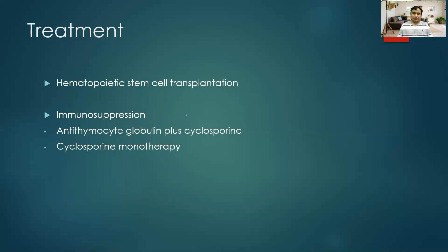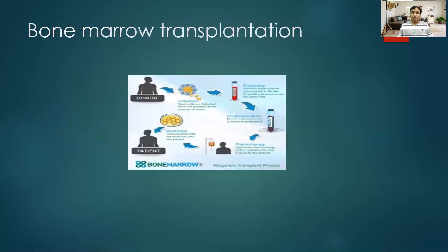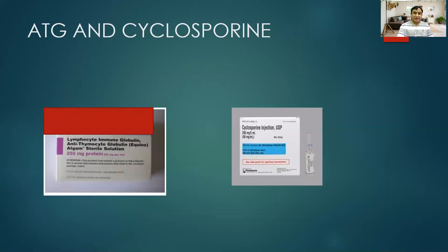If stem cell transplantation is not possible due to unavailability of a donor, we use immunosuppressives. The immunosuppressive of choice is anti-thymocyte globulin (ATG) plus cyclosporine. Some centers have used cyclosporine alone with good results, but the recommended regimen is ATG plus cyclosporine combination therapy, which works especially well even in young adults.